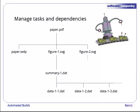Figure1.svg depends on summary1.dat, which in turn depends on data11.dat, data12.dat, and so on, while figure2.svg depends on files with similar names.